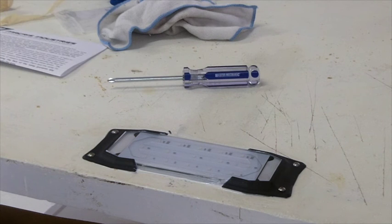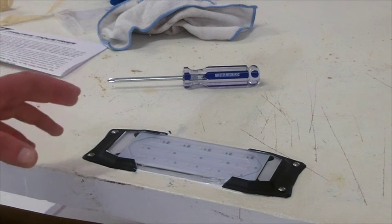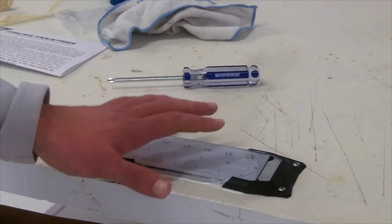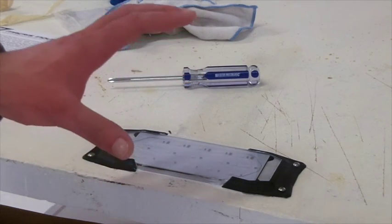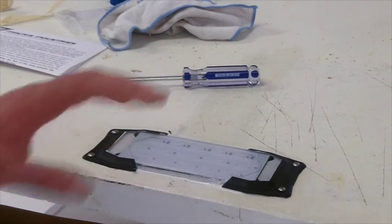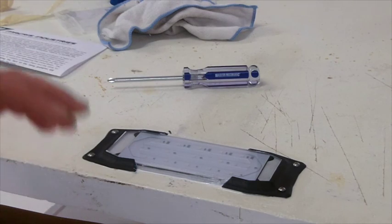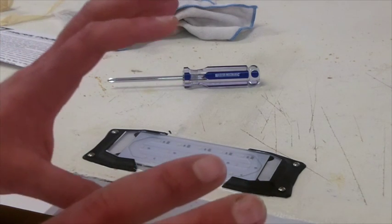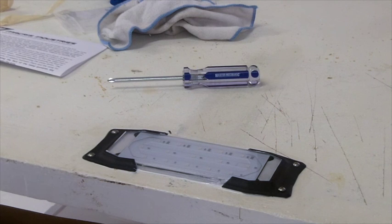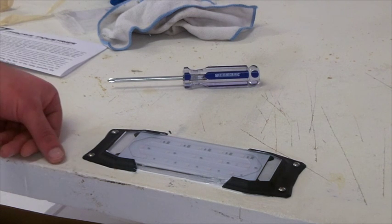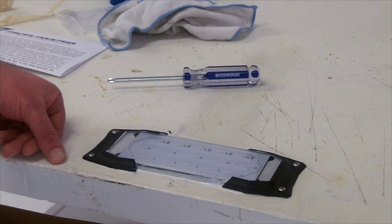We're going to do another installation video showing how to do these with no fasteners. This light exists in a way that you can mount it with no fasteners whatsoever. So you can just basically stick it onto the boat and let it cure in place. And we'll do another video following up about wiring and fusing and switching and all that good stuff. Thanks for watching and let us know if you have any questions.